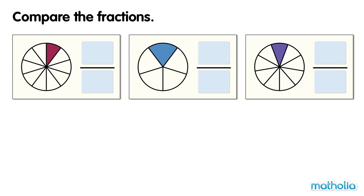Compare the fractions. This circle has ten equal parts. One part is shaded. One tenth of the circle is shaded.